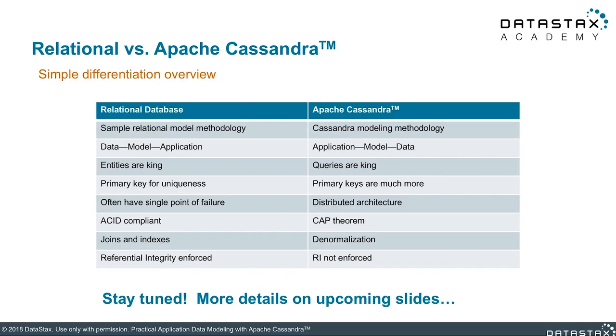If you've ever done relational data modeling, you're going to find that modeling for Cassandra has some distinct differences, and there may be a few relational modeling habits that you'll need to unlearn. Here's a quick summary of the differences. In Cassandra data modeling, we think about the application needs before designing our data model. For this reason, the queries are the driving force in Cassandra data modeling, whereas the driving factor in relational modeling is the entities.